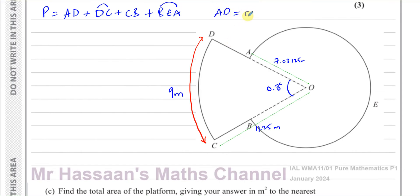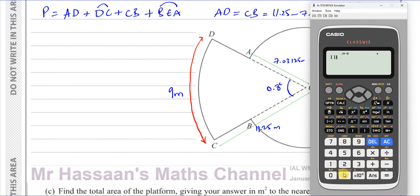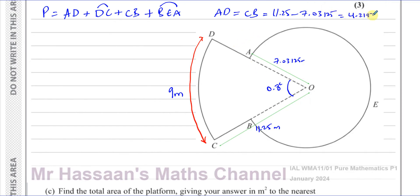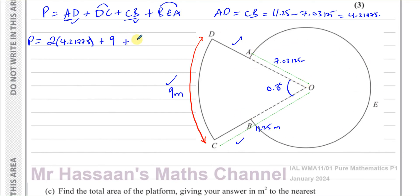AD equals CB, and each equals the radius of the large circle minus the radius of the small sector: 11.25 − 7.03125 = 4.21875 metres. So the perimeter includes two times 4.21875 for those two straight lengths, plus the arc DC which is 9 metres, plus the arc BEA. The angle for the major arc BEA is 2π − 0.8 radians.